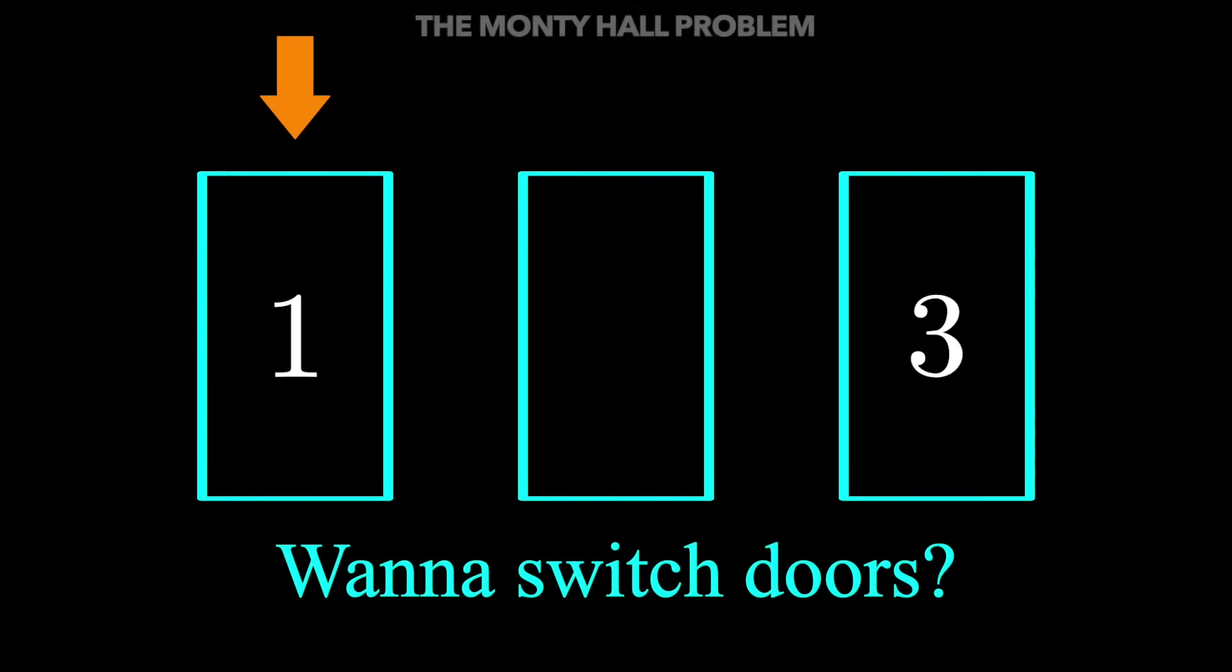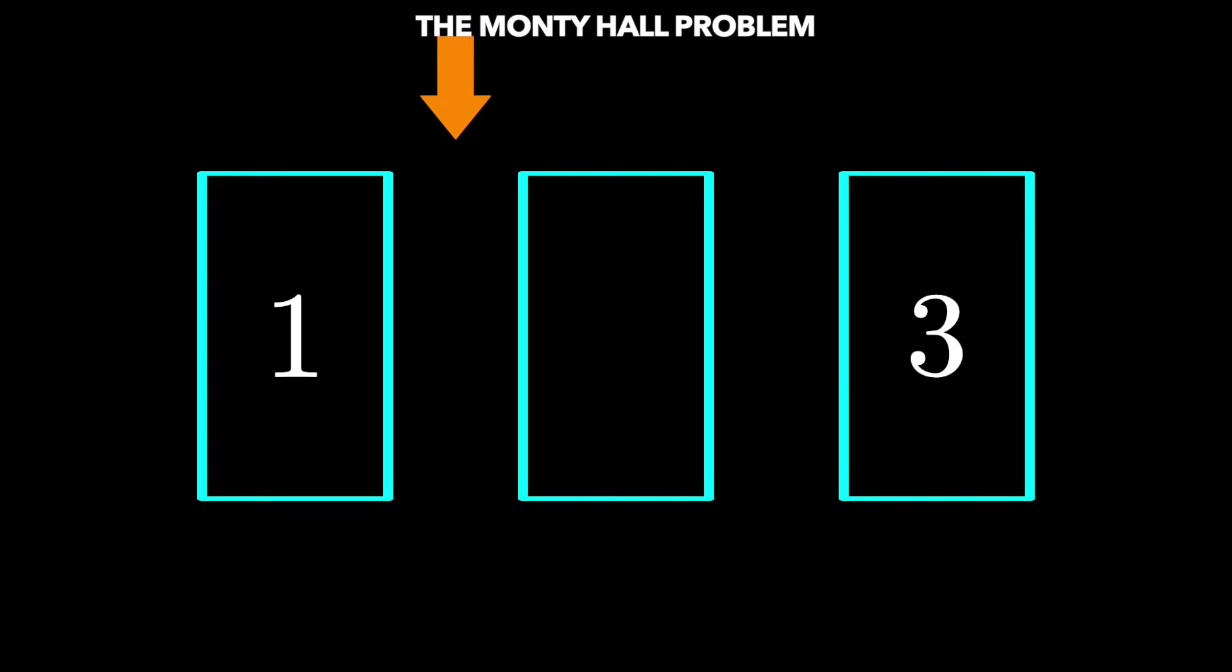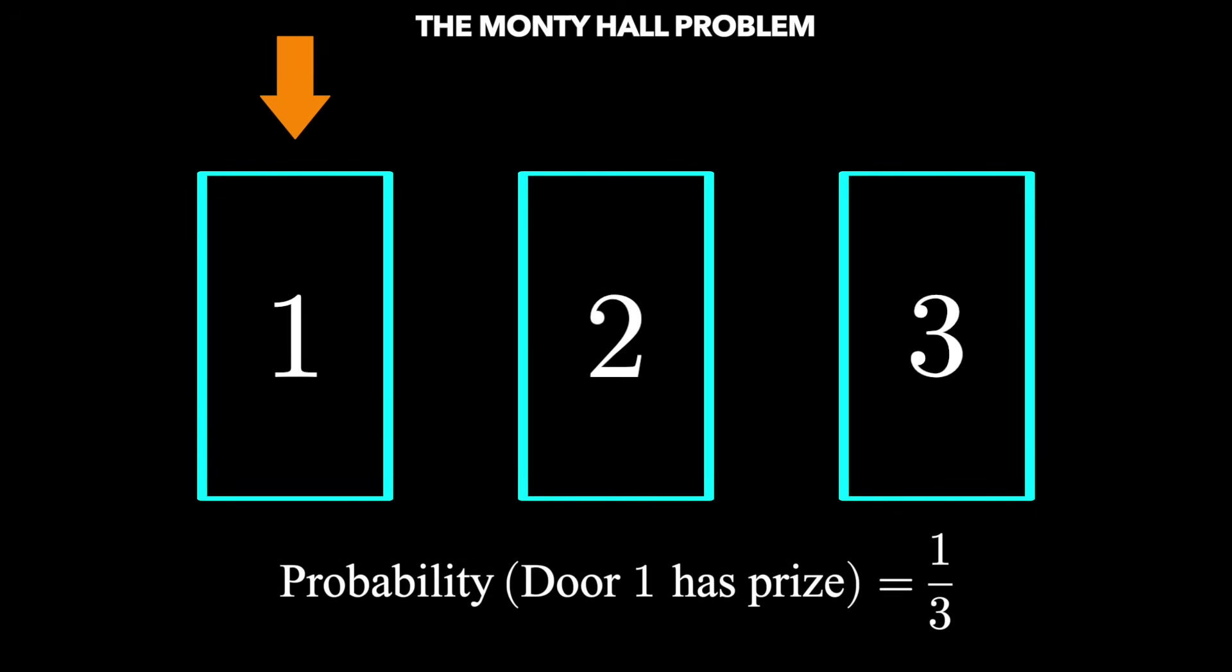Now I'll pose the question. Would you like to switch doors? Do you want to trade door number one for door number three? On the surface, it doesn't really seem like it should matter. When you first selected your door, there was only a one-third chance you selected correct. And now that you know one of the doors that didn't have the prize, there's still only a 50-50 shot between which door has the prize. Right?